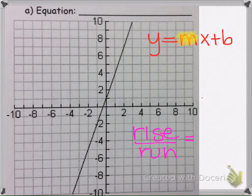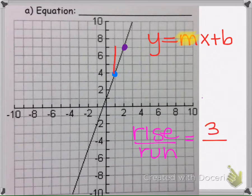I'm going to pick two points: the point (1, 4) and the point (2, 7). I'm going to rise 1 box, 2 boxes, 3 boxes. And then I'm going to run 1 box.